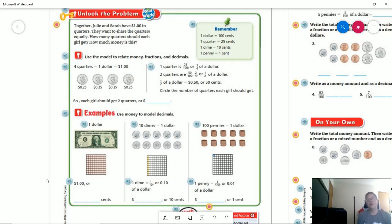So let's take a look at our unlock the problem. We are continuing working with things related with money. So together, Julie and Sarah have one dollar in quarters. That would be our four quarters here. They want to share the quarters equally. How many quarters should each girl get and how much money is this?